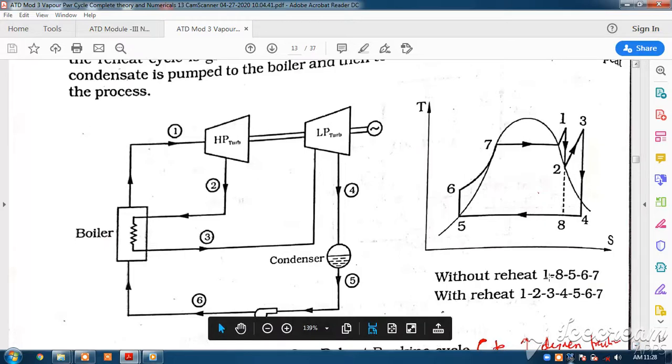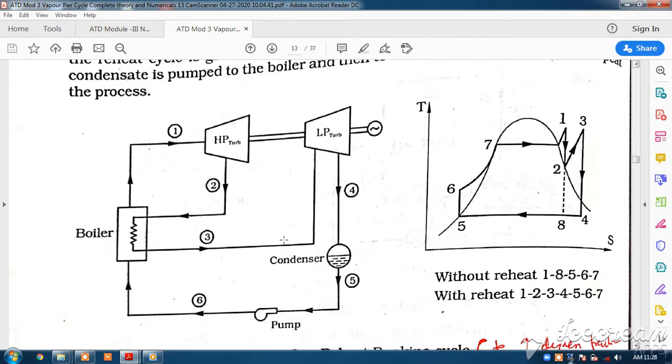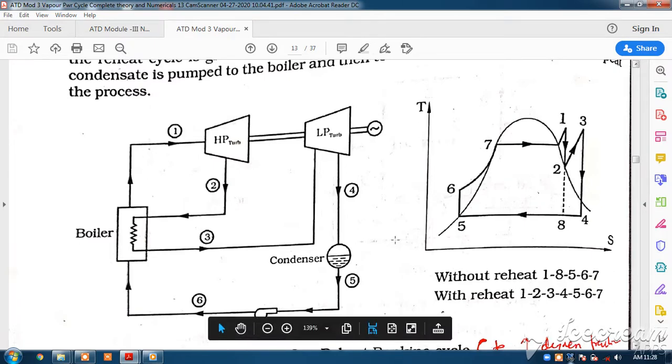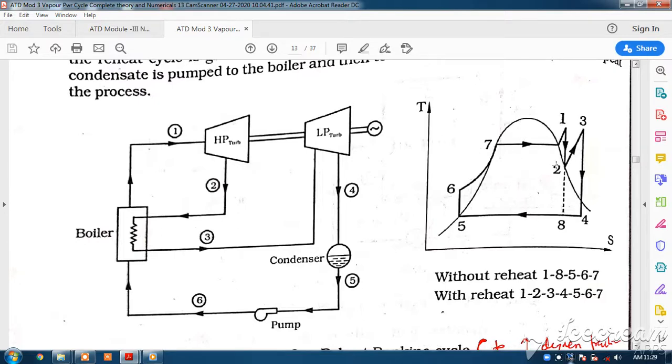Now we can see here, cycle points 1-8-5-6-7 represent without reheat. But with reheat, from 2 to 3, it goes 1-2-3-4-5-6-7. So this is the TS diagram for without reheat and this is with reheat.